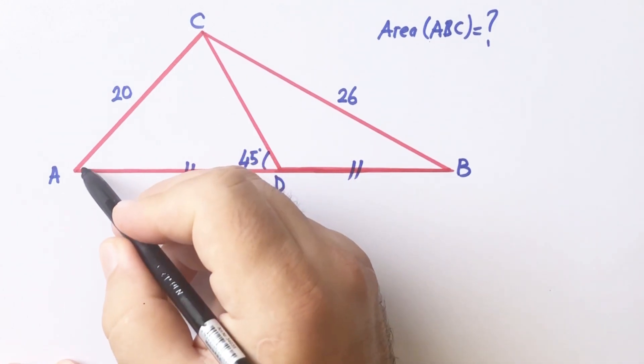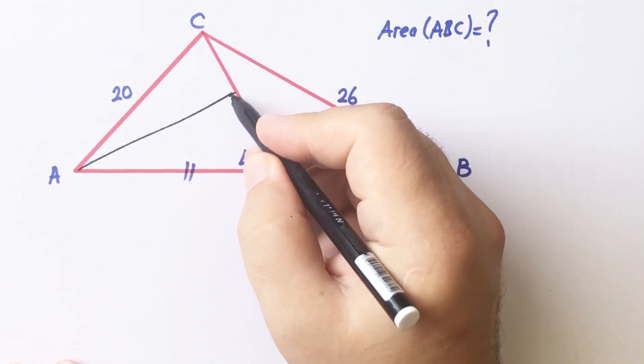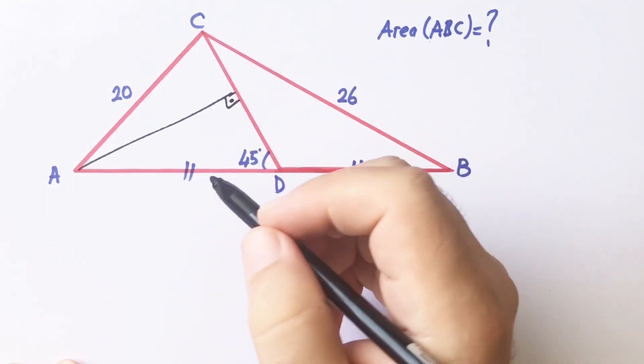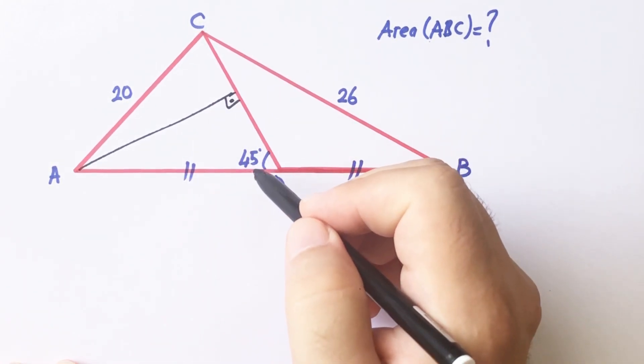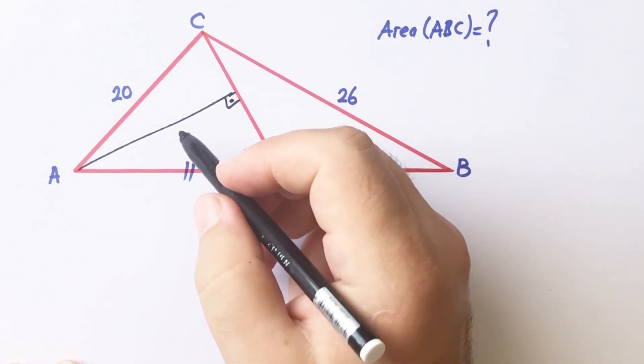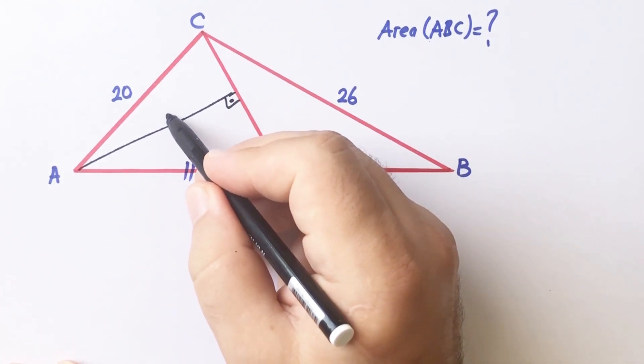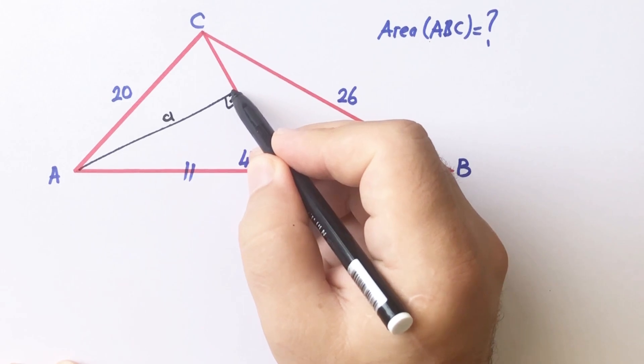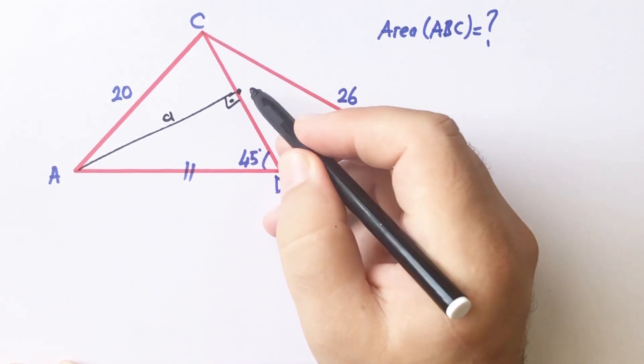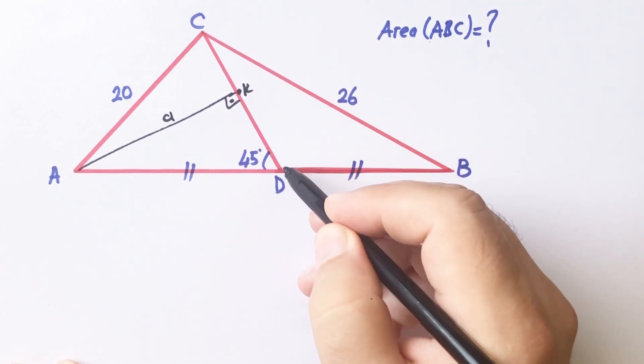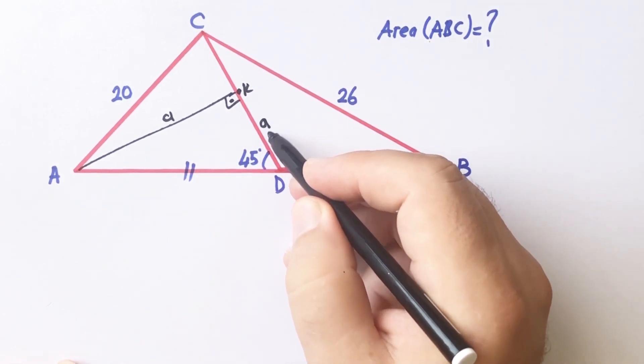First, if we draw a perpendicular line opposite to the 45 degrees, we get an isosceles right triangle. So if there is an a unit here, this length must be a unit. That's how isosceles works.